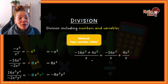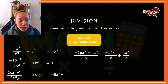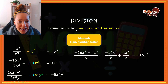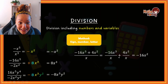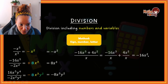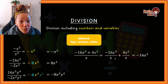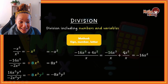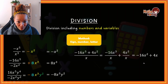Once we split the question, we deal with each section using the sign, number, letter method. For the first part: negative divided by positive is negative; 16 divided by the invisible 1 gives me 16; x to the 3 over x means 3 minus 1 which gives me x to the power of 2. Then for the second part: plus, positive divided by positive is positive; 4 divided by 1 is 4; and x squared over x gives just x.